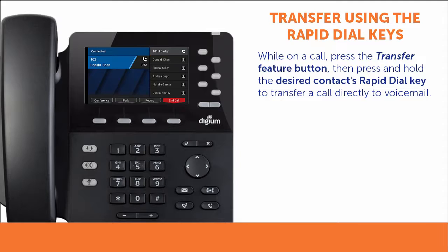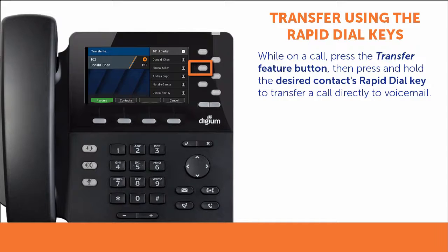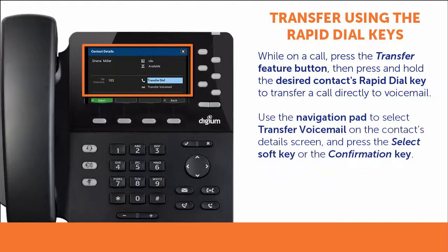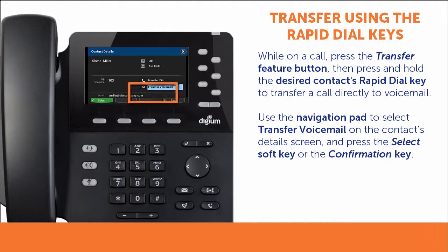If you want to transfer a call to the person's voicemail directly, without ringing their phone, then while on a call, press the Transfer Feature button or soft key to start the transfer. Then press and hold the contact's Rapid Dial key. This will display the person's contact details where you can select Transfer Voicemail.